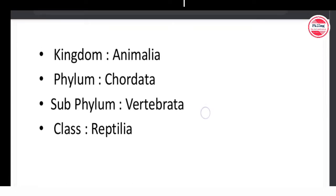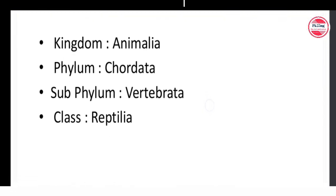First of all, we need to understand the classification of reptiles or snakes. All organisms are divided into two categories: invertebrate and vertebrate. Snakes come under vertebrate. The classification is: Kingdom — Animalia; Phylum — Chordata; Subphylum — Vertebrata; and Class — Reptilia, or reptiles.